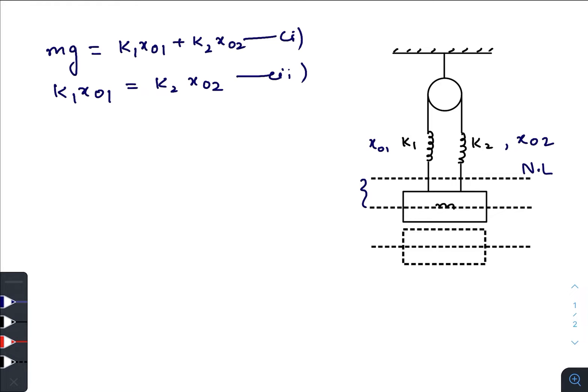Now what we are doing is pulling this block slightly downwards. After releasing it, it performs simple harmonic motion. At some instant of time, the block reaches down by a value x from its mean position. This line represents the mean position, this line represents the natural length of the spring.